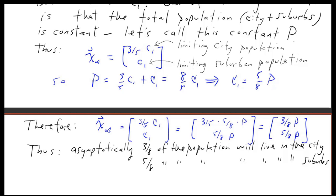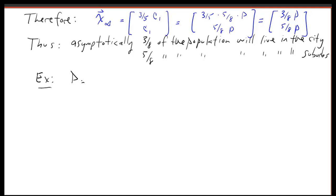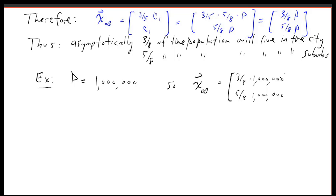Note that these fractions are independent of the initial population vector — that is, independent of how the initial population is distributed between the city and the suburbs. For example, if the total county population is 1,000,000, then x_∞ = (375,000, 625,000).